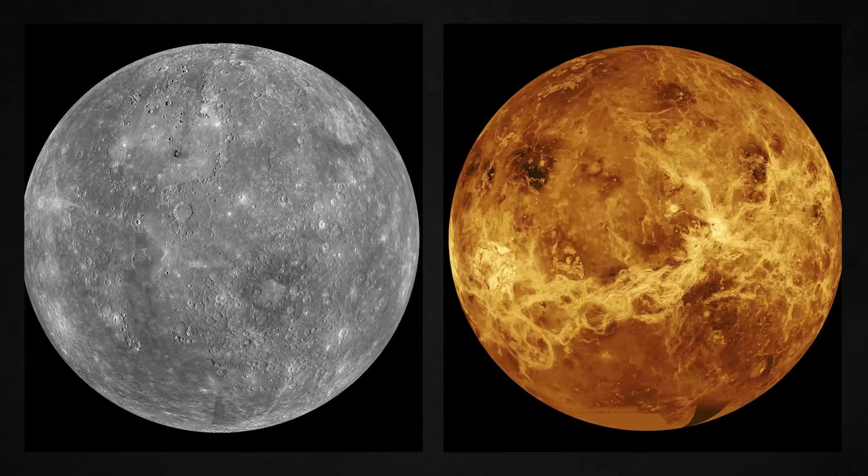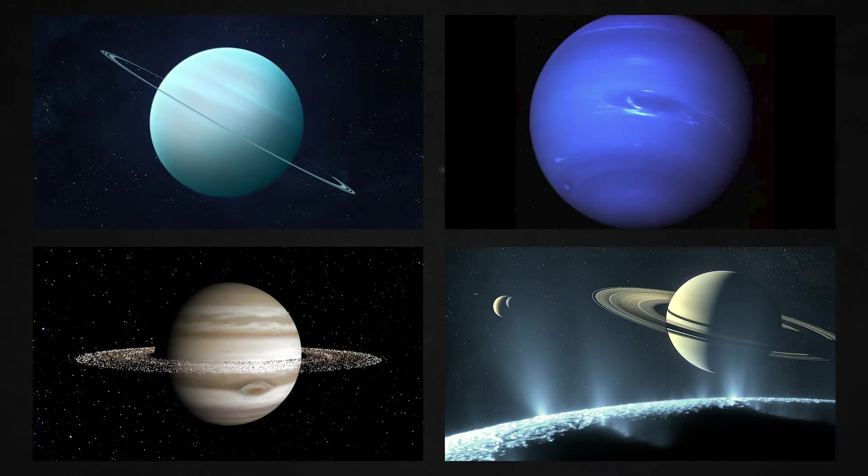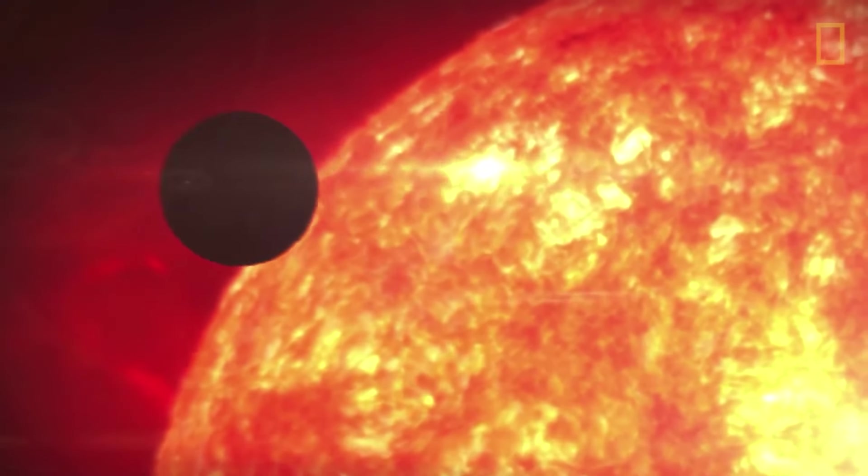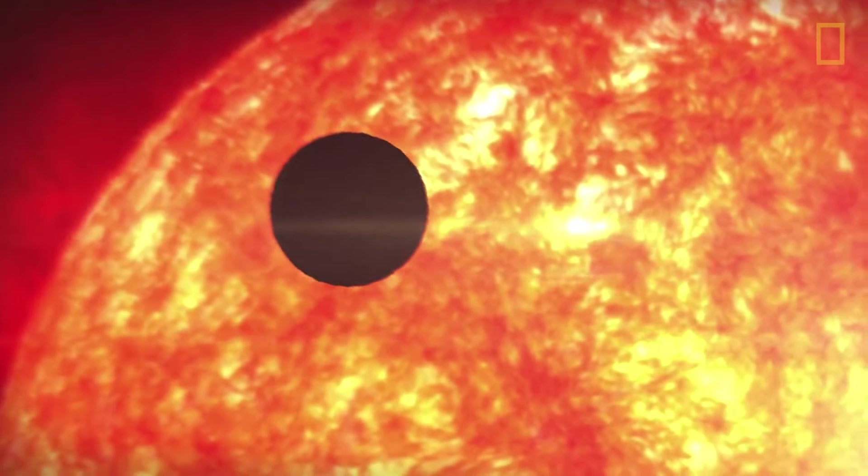The planets in our solar system are Mercury, Venus, Earth, Mars, Jupiter, Saturn, Uranus and Neptune. These planets can be categorized into two main groups based on their characteristics and composition.